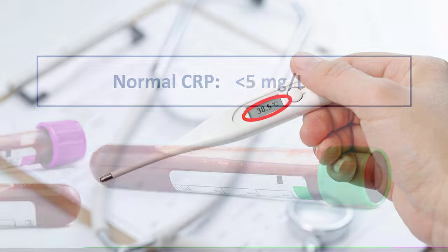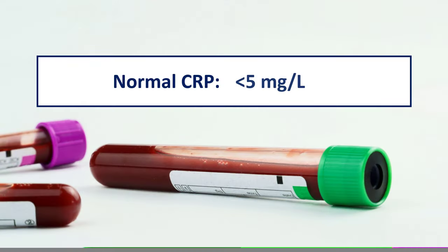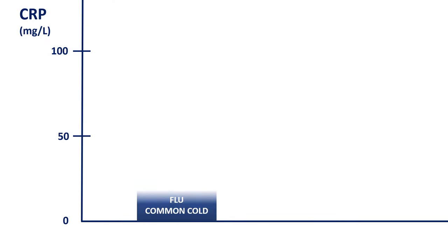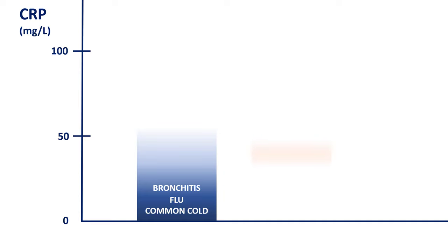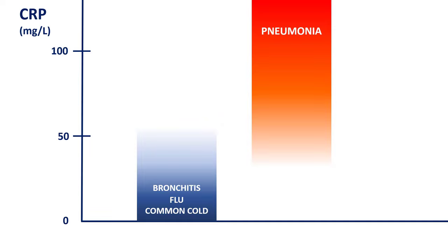The normal level of CRP is up to 5 milligrams per liter. In uncomplicated viral respiratory tract infections like the common cold, uncomplicated influenza, or acute bronchitis, it's up to 20 or 30 milligrams per liter, maybe occasionally around 50. In bacterial pneumonia, on the other hand, it's usually well over 50, but many times much higher than that, above 100 or 200.